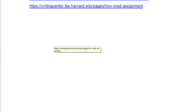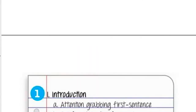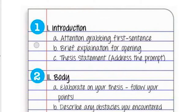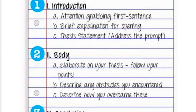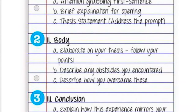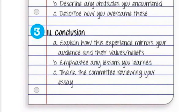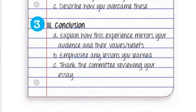Here is the feedback structure for you. Introduction: attention-grabbing first sentence, brief explanation for opening, thesis statement, address the problem you are going to talk about. Body: elaborate on your thesis, follow your points, describe any doubts and challenges you encountered and how you overcame them, how you faced that and succeeded. Conclusion: explain how this experience mirrors the audience's values and beliefs, and emphasize any lessons you've learned.